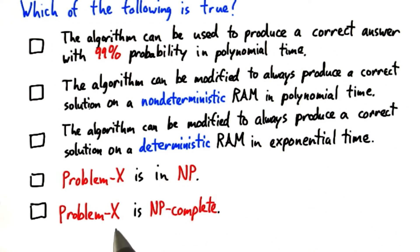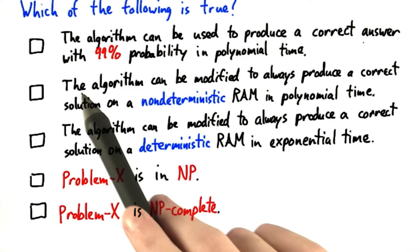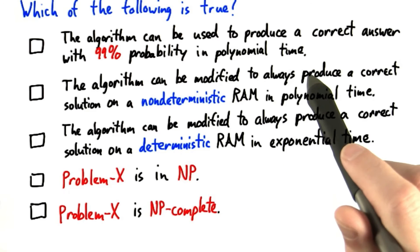Then I'd like to know which of the following statements are true. That the algorithm can be used to produce a correct answer with 99% probability in polynomial time.